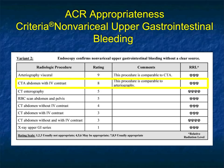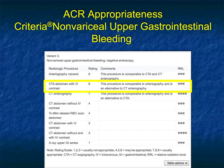Looking at the ACR appropriateness criteria for non-variceal upper GI bleeding: in the variant where endoscopy confirms non-variceal upper GI bleeding without a clear source, angiography is rated nine — the highest rating — while CT with IV contrast is rated eight. These days for GI bleeding, you get a CT scan first. If CT is negative, you stop there. If CT is positive, you have a good idea of the bleed source and angiography can be more directed.